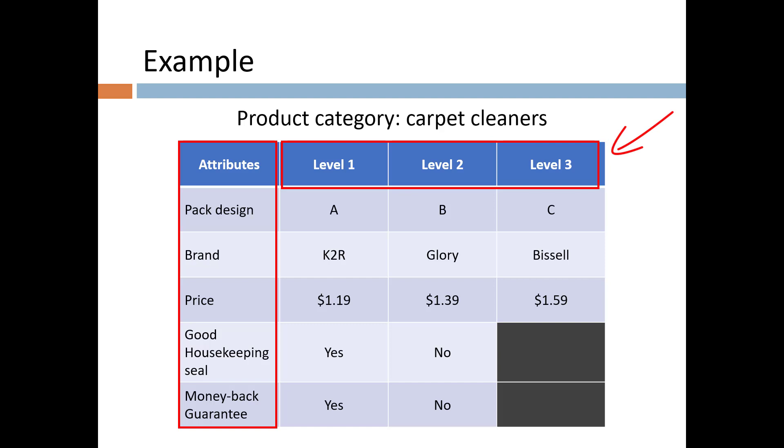Each attribute has a number of levels, that is, options. In our example, pack design has three levels, A, B, and C, which are different shapes of the package. For brand name, there are three possibilities: K2R, Glory, and Bissell. For price as well, there are three options: $1.19, $1.39, and $1.59. For the good housekeeping seal, it can either be present, indicated by the level yes, or absent, indicated by no. Similarly, the money-back guarantee can either be yes or no. So these two attributes have only two levels each.